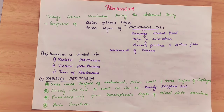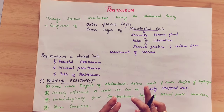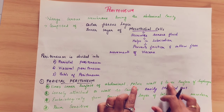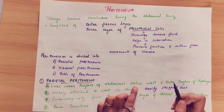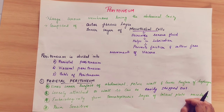The peritoneum is a serous membrane covering the abdominal cavity. In this peritoneum, there are two layers: one is the outer layer and one is the inner layer. The outer layer is fibrous. The inner layer is made of mesothelial cells, which secrete serous fluid.